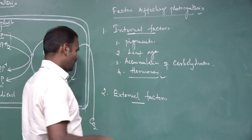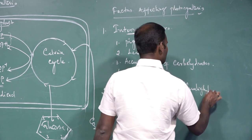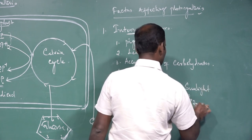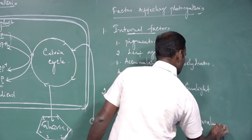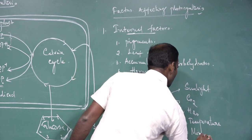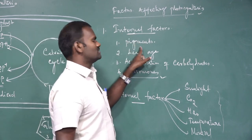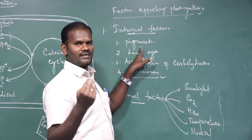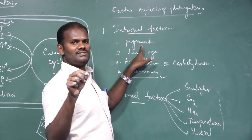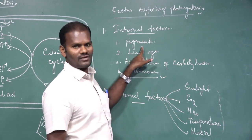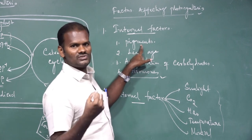External factors include sunlight, carbon dioxide, water, temperature, and minerals. Regarding internal factor of pigments: they are grouped into primary and secondary pigments. If there is any reduction in the supply of pigments to the plant, the rate of photosynthesis is automatically affected. If the number of pigments is reduced due to various factors, the rate of photosynthesis is affected.